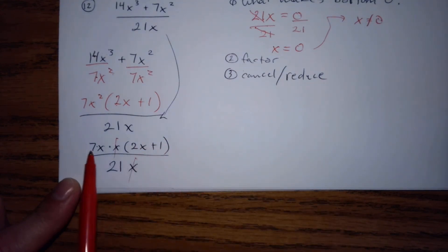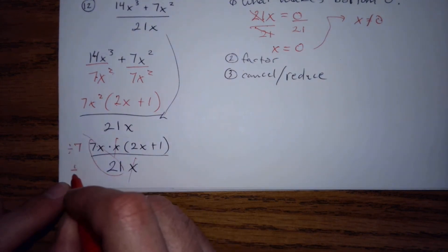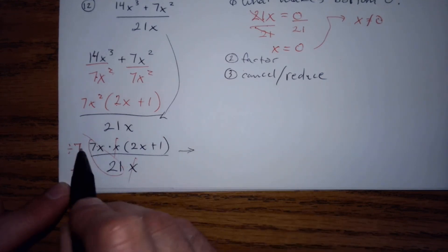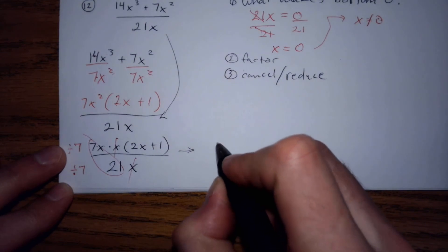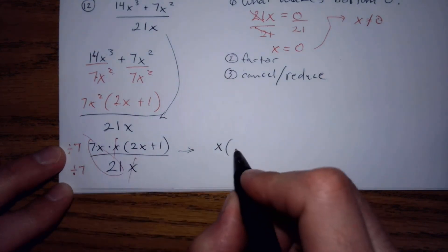This stays. This x stays. And then I reduce this by dividing by 7. I would get just x in the top for this part, and then 2x plus 1 in parentheses.